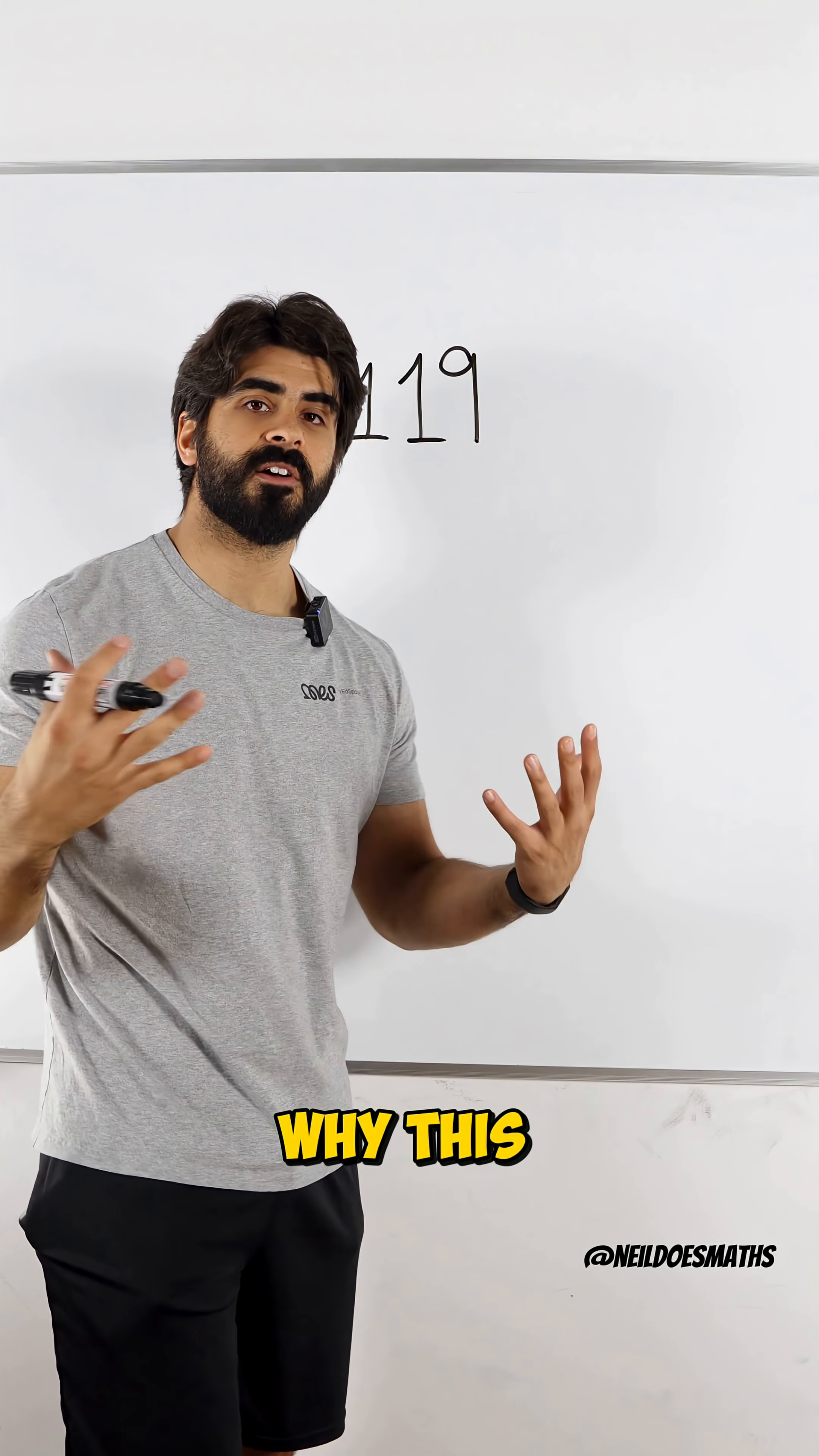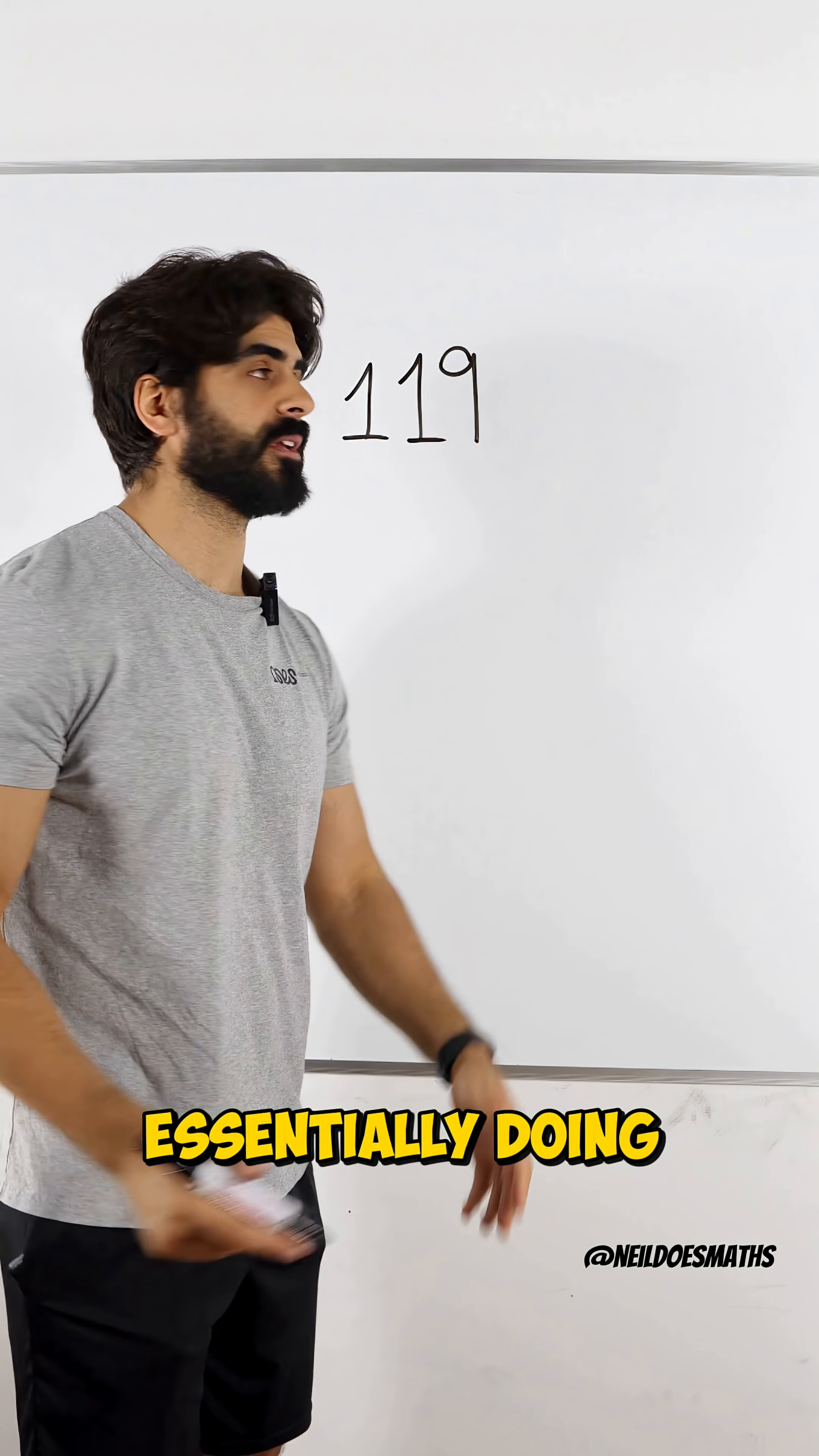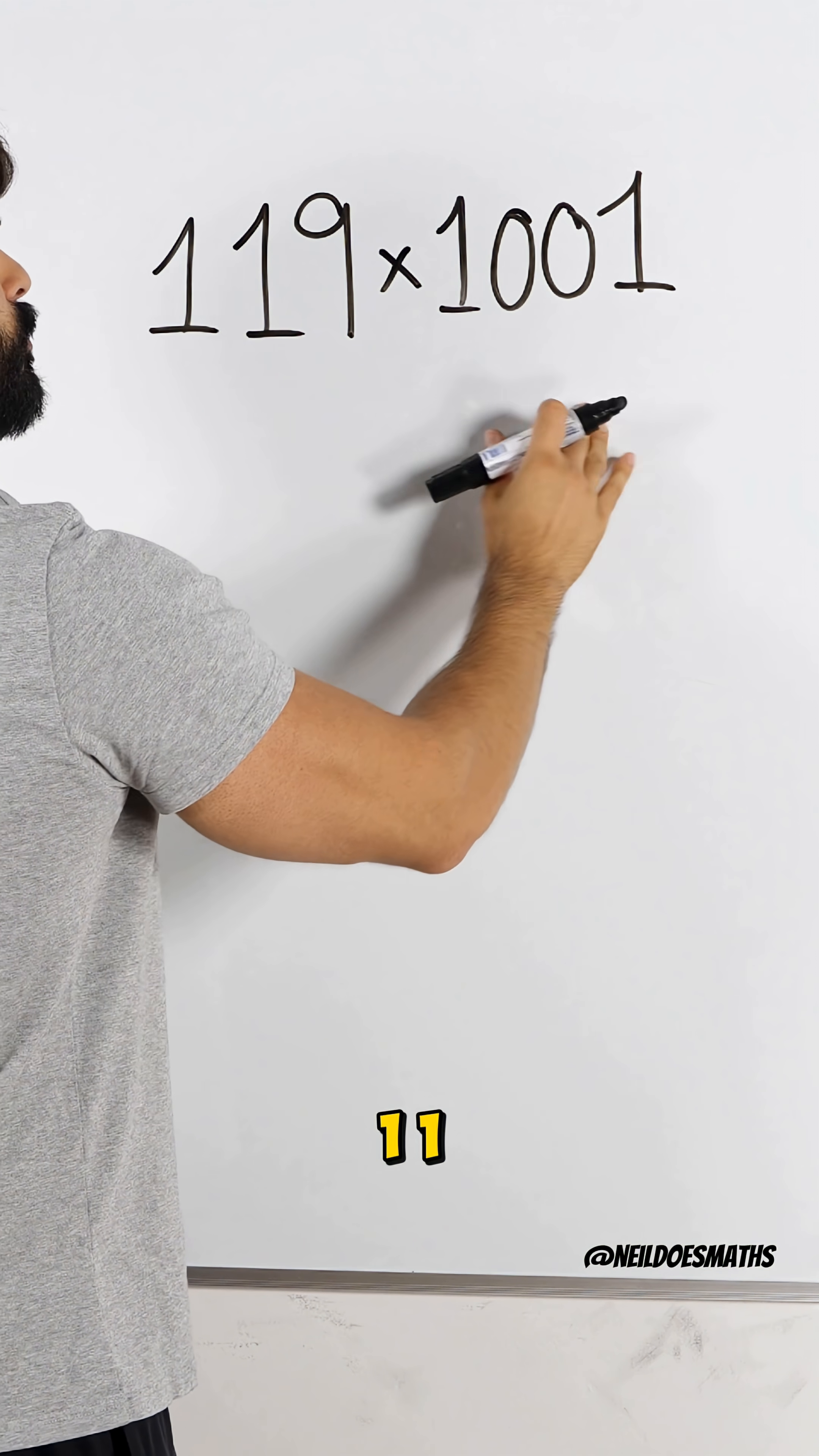Now, the reason why this works is to duplicate a three-digit number, all you're essentially doing is multiplying it by 1001. So this times this gives you 119, 119.